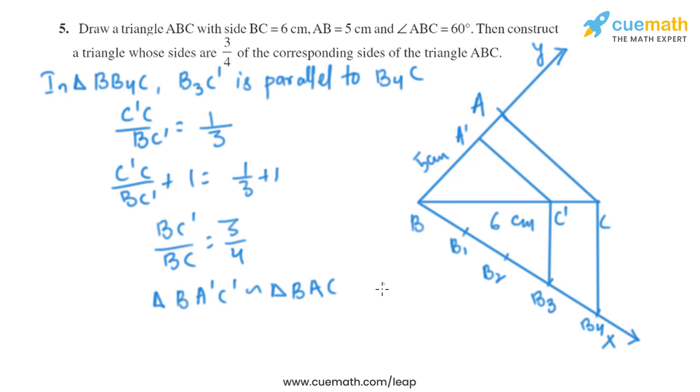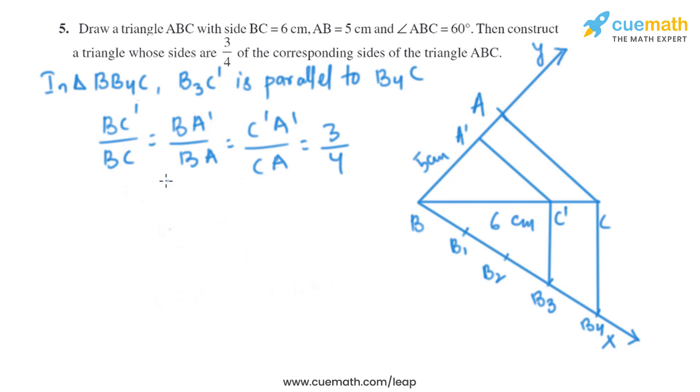And triangle BA'C' is similar to triangle BAC by angle-angle-angle similarity criteria. So the corresponding sides are proportional. We'll get BC' by BC equals BA' by BA equals C'A' by CA equals three by four.